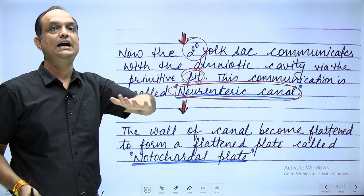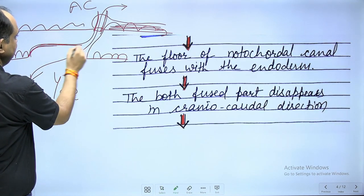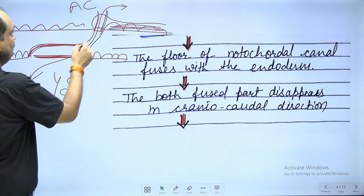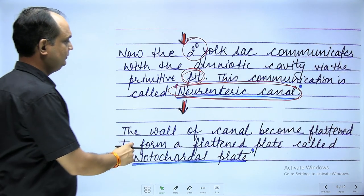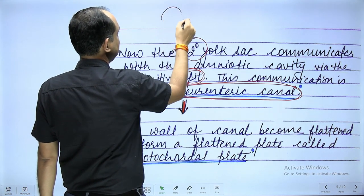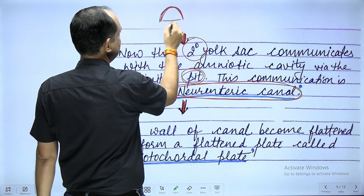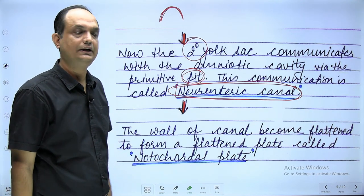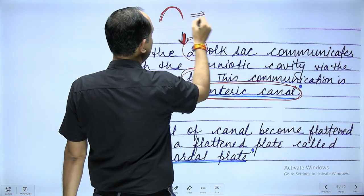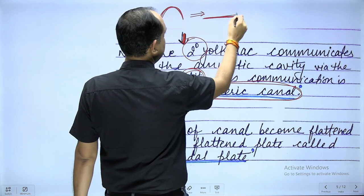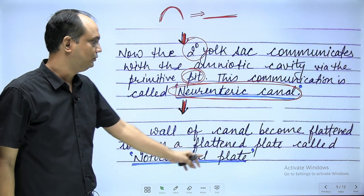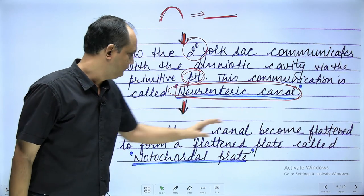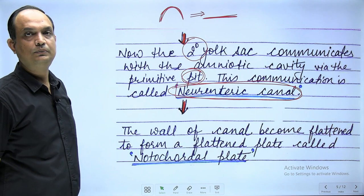Once the roof becomes flat, the communication with the yolk sac no longer persists. Seen in cross-section, the roof persists while the floor has disappeared to form the neurenteric canal. This flattened roof is now called the notochordal plate. So the wall (roof) of the notochordal canal becomes flattened to form the notochordal plate.